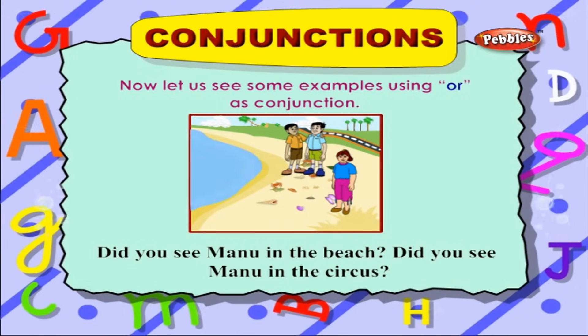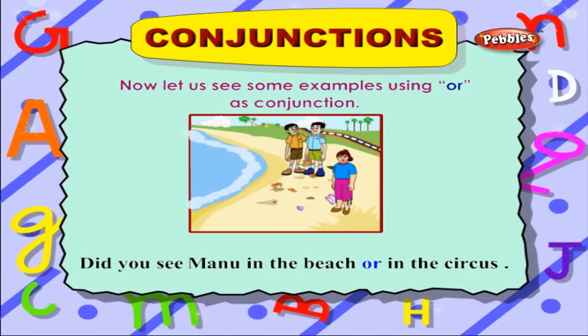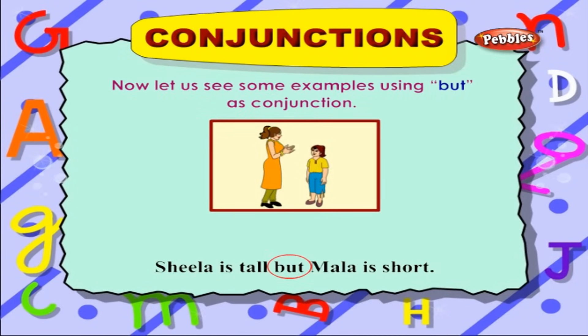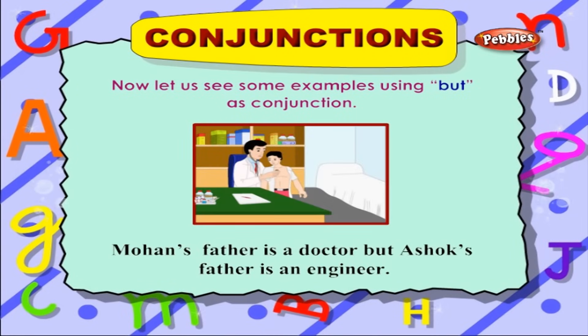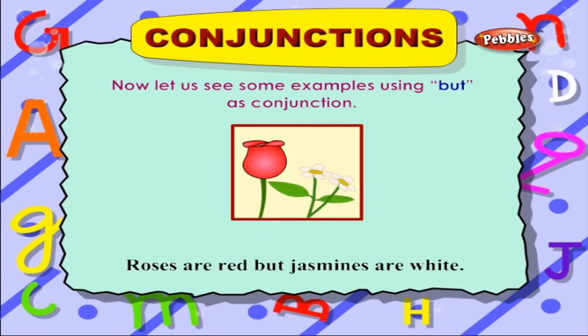'Did you see Manu in the beach or in the circus?' Now let us see examples where 'but' is used: 'Sheila is tall but Mala is short.' 'Sunil is fat but Anil is thin.' 'Mohan's father is a doctor but Ashok's father is an engineer.' 'The elephant is a huge animal but cannot run very fast.' 'Roses are red...'